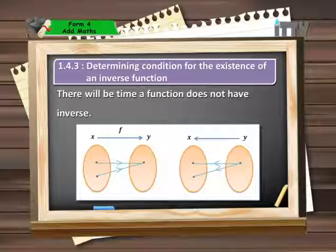A many-to-one relation is a proper function. But observe what happens when we apply the inverse function. An inverse function maps the image back onto the object. So if in the original case two objects share the same image, then the inverse function will change the image back into those two objects. This means we have a one-to-many situation in the inverse function. A one-to-many relation is not considered a proper function; therefore, the inverse does not exist.